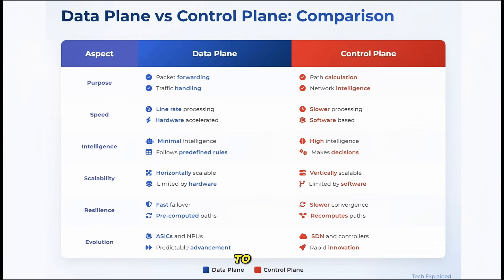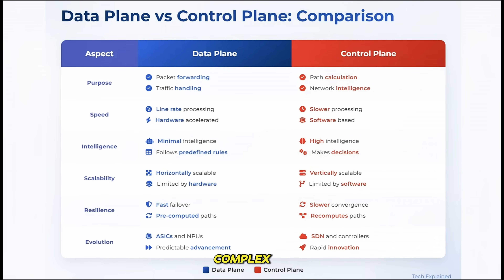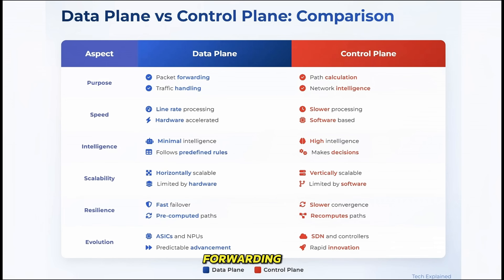When it comes to intelligence, the data plane is relatively simple — it just follows pre-programmed instructions. The control plane is where the real intelligence lies, making complex decisions based on network conditions. Scalability differs too: the data plane scales horizontally, adding more forwarding capacity as needed, while the control plane often scales vertically, requiring more powerful processors to handle larger networks.